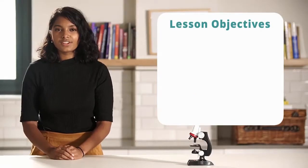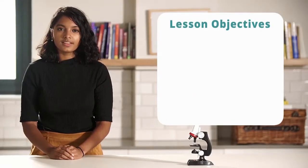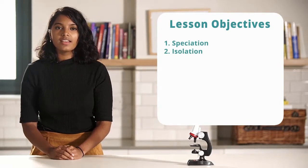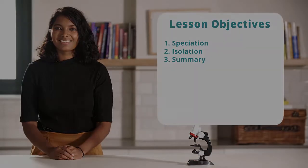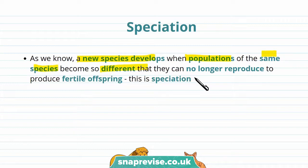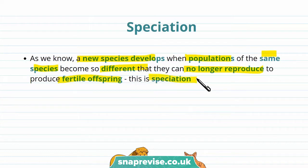Hi guys, in this video I'll be discussing speciation and isolation, and finally a summary. Organisms can be grouped into species. A new species develops when populations of the same species become so different that they can no longer reproduce to produce fertile offspring. And this is called speciation.